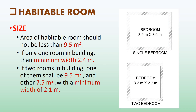Now let's discuss the size of habitable rooms. The area shall not be less than 9.5 square meters, with a minimum width of 2.4 meters where there is only one room, as shown in the upper plan. Where there are two rooms, one shall not be less than 9.5 square meters and the other not less than 7.5 square meters, with a minimum width of 2.1 meters, as shown in the below plan.